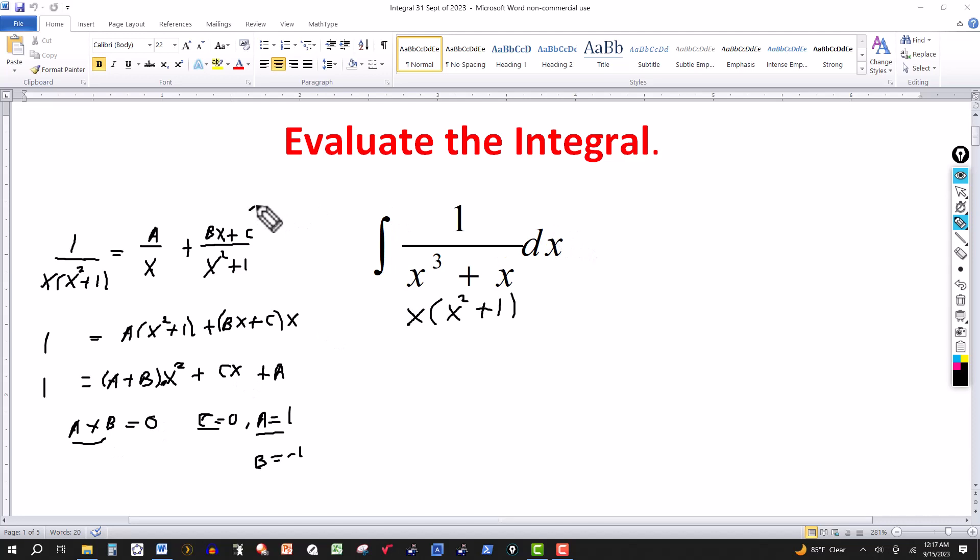So now we can replace the values here. This comes down to the integral, where we have A over x. But we found A to be 1, so this is 1 over x, plus Bx plus C over x squared plus 1. B is negative 1, so this will be minus x. And C is 0, so that leaves me with minus x over x squared plus 1, dx.